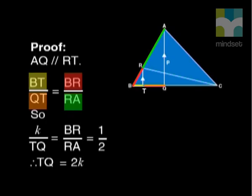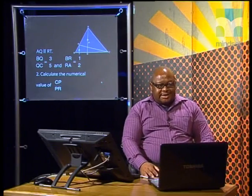Replace BT with K and put this equal to one half. Then, cross multiply and what do we find? TQ equal to 2K. Here's the next part of the question.